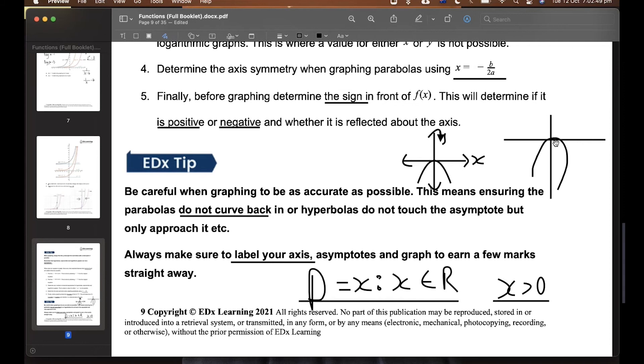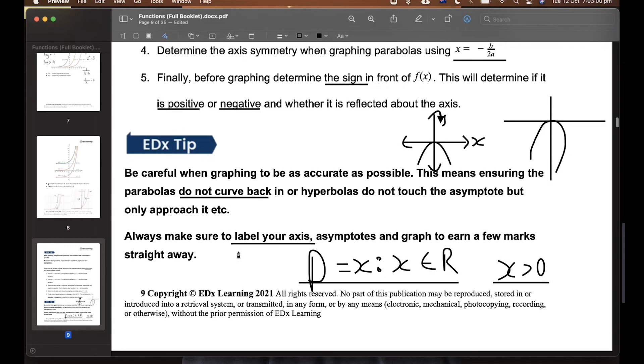I think in Year 11 they might have let you get away with it a little, but in Year 12 we've got to make sure to up our game. They're going to come for you if you don't have a nice-looking graph. Always remember to label your axes, asymptotes, and graph to earn a few marks straight away.